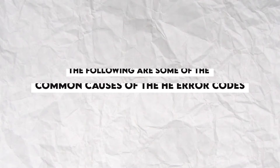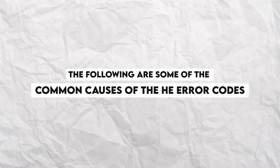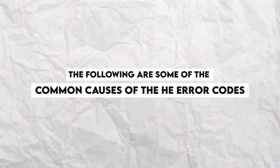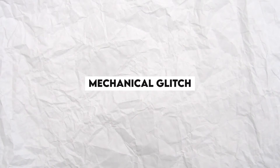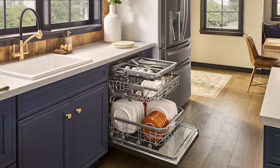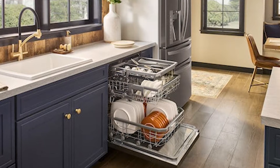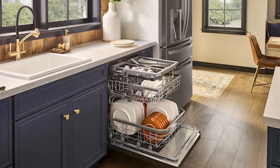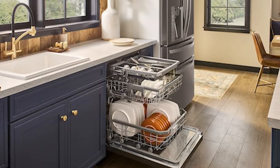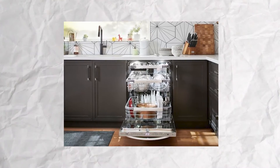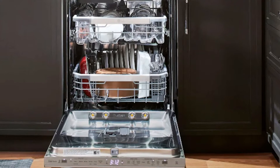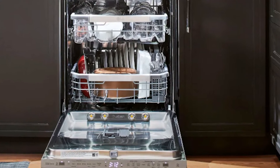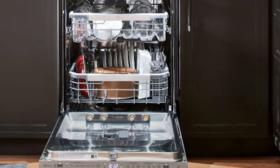The following are some of the common causes of the HE Error Code. Mechanical Glitch: The HE Error Code can occur when the dishwasher is experiencing short-term electrical glitches, showing unusual errors. The error code display indicates that the dishwasher has a mechanical glitch.